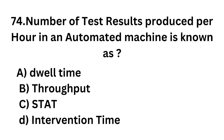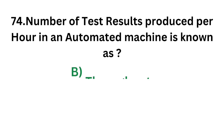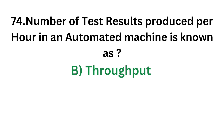Question number 74. Number of test results produced per hour in an automated machine is known as: Option A - Dwell time; Option B - Throughput; Option C - Start; Option D - Intervention time. The correct answer is Option B, Throughput. Number of test results produced per hour in an automated machine is known as throughput.